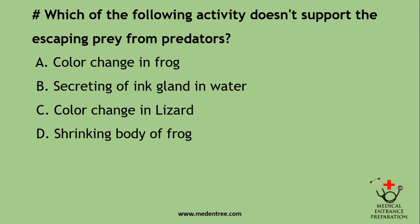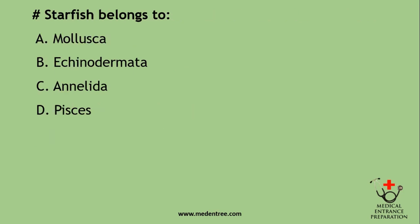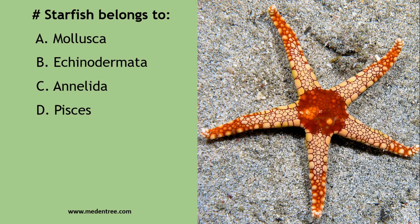Which of the following activity does not help in escaping from predators? Color change in frog, secreting ink in water, color change in lizard, or shrinking body of frog? The correct answer is shrinking body of frog — all other options are used by animals to escape from predators. Starfish belongs to: Mollusca, Echinodermata, Annelida, or Pisces? 'Echinus' means rough body surface with spines. Starfish is an echinoderm with an easily recognizable typical shape.